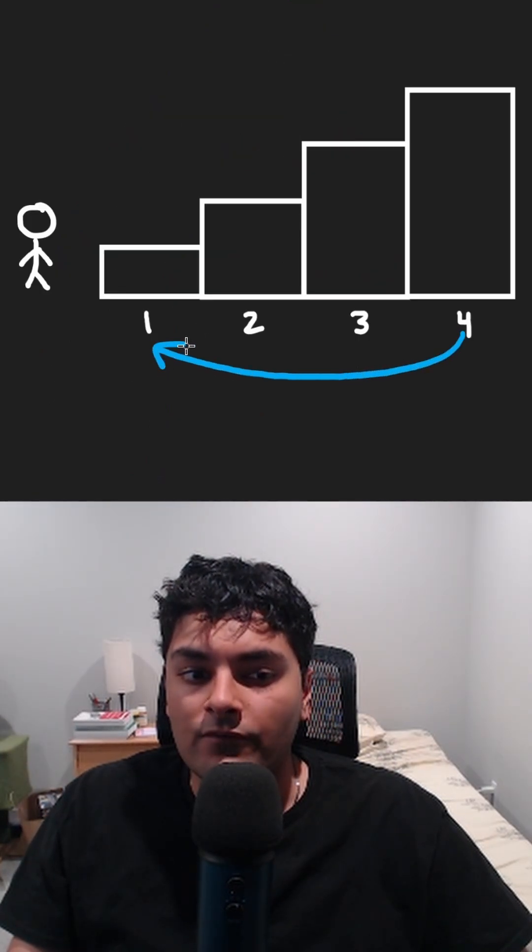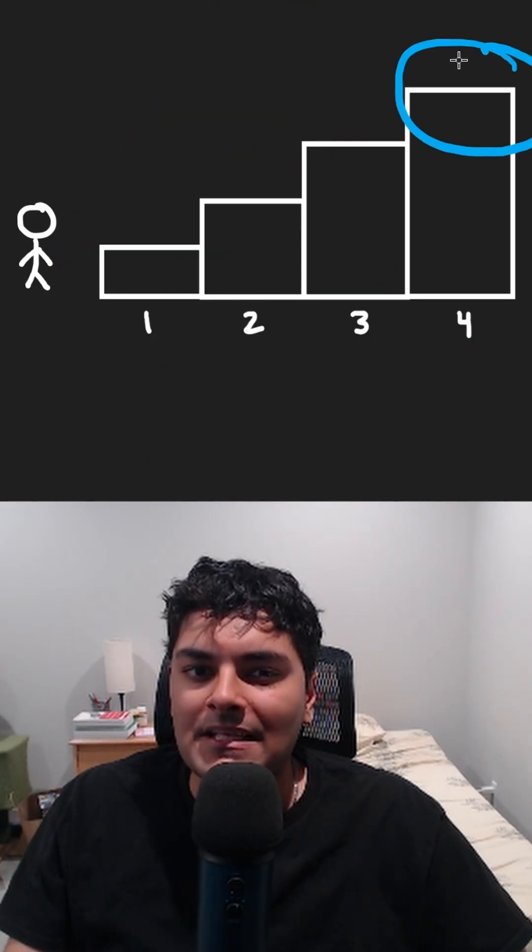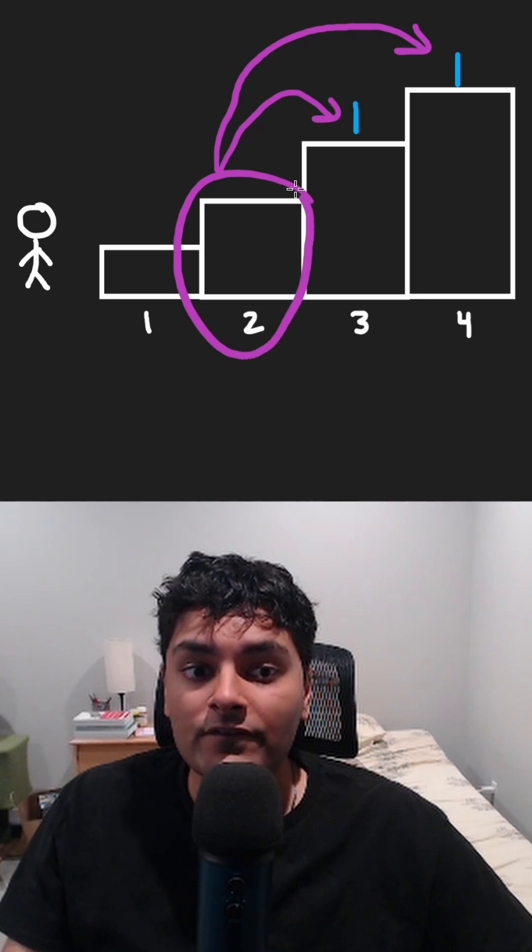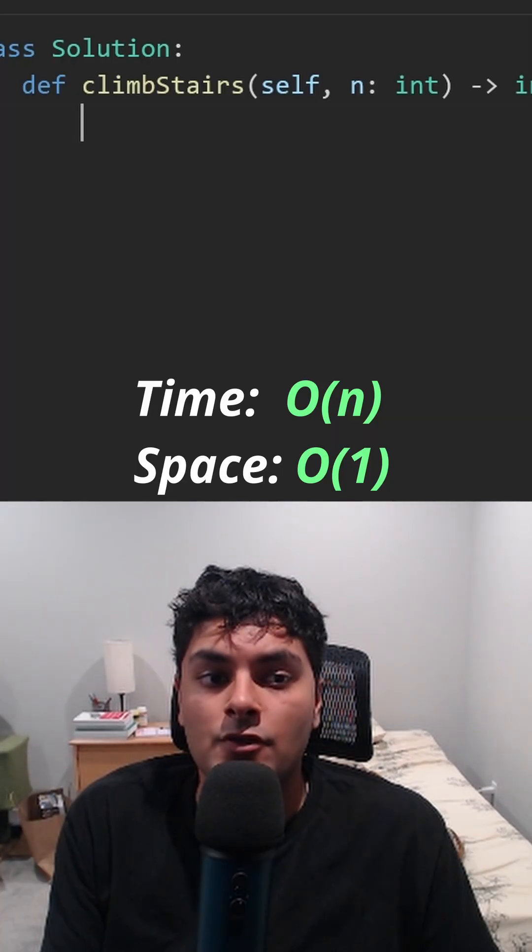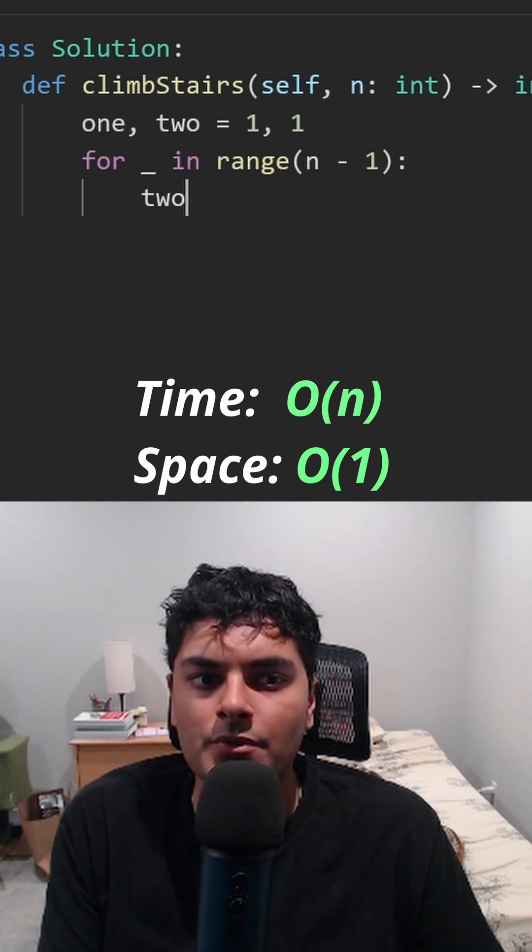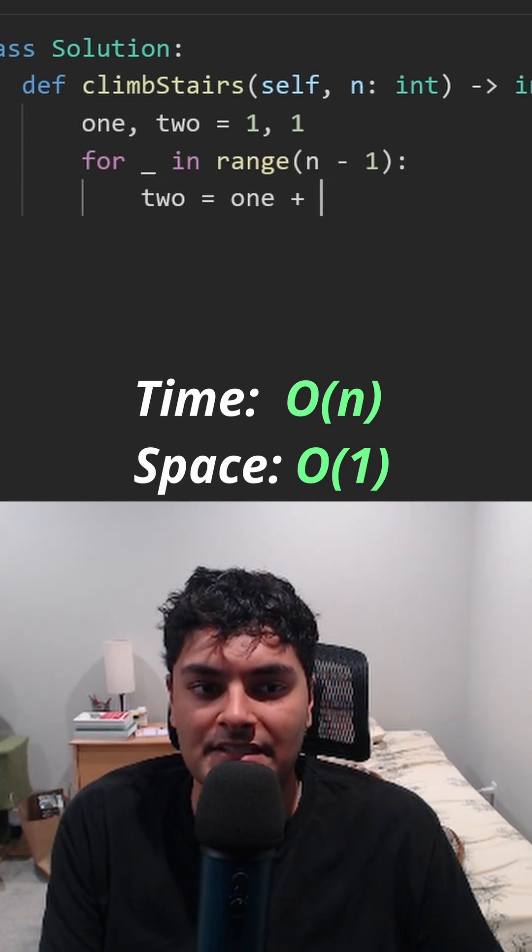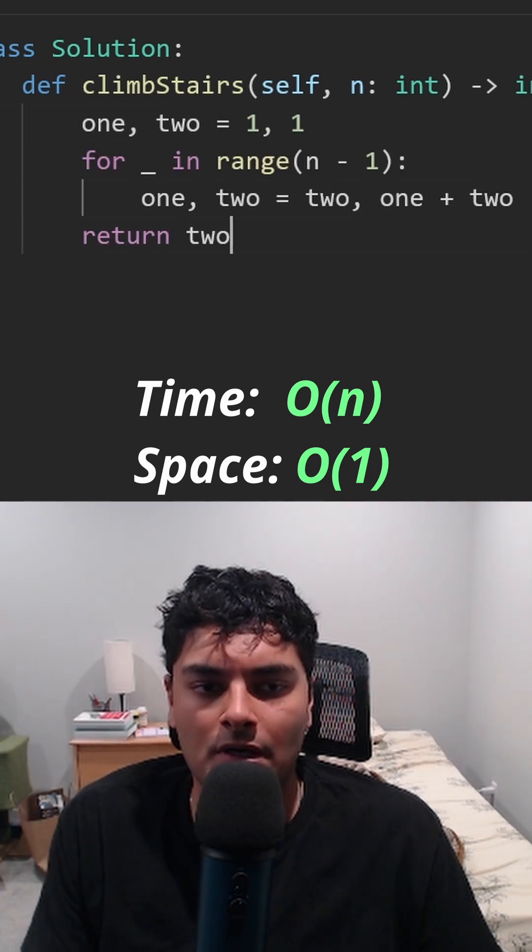We can actually solve this problem in reverse order. At the last step, that's kind of the base case. So starting from step two, we can get to step four with one plus one. So we're pretty much coding up the Fibonacci sequence. Two is going to be the sum of the two previous numbers. We can return the second one. And there you go.